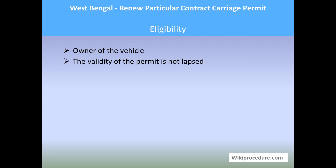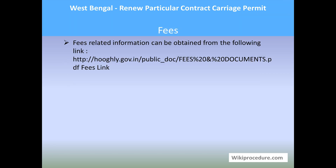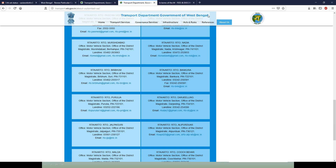Eligibility: the owner of the vehicle is eligible for this procedure. The validity of the permit should not have elapsed. The permit is usually valid for five years. The renewal of the permit can be obtained with a vehicle fitness certificate as per the authorities of the concerned RTO. The age of the vehicle also limits the validity of the permit.